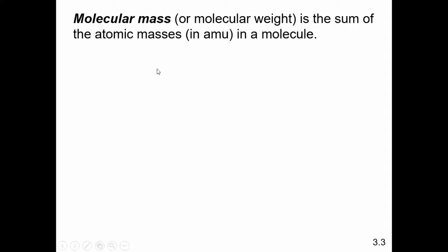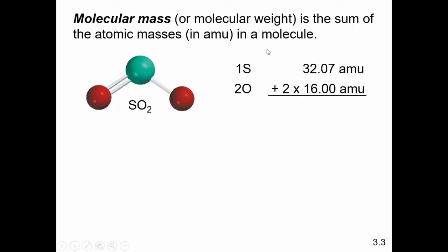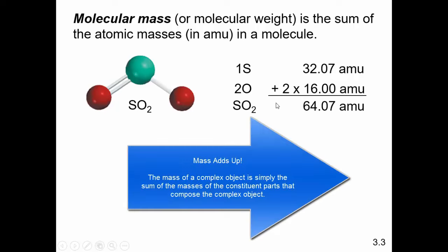And it is the sum of atomic masses in a molecule. Basically, the underlying principle is that mass adds up. So imagine we have a molecule of SO2, sulfur dioxide. So the molecule is made up of one atom of sulfur, two atoms of oxygen. So the mass of the entire molecule will be the sum of the masses of the individual atoms. Simple concept, of course. You know that mass adds up.